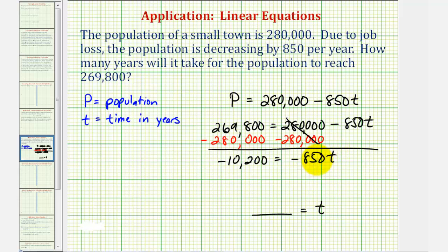To solve for T, we'll divide both sides by negative 850. Negative 10,200 divided by negative 850 is equal to 12. So we have 12 equals, on the right side, this simplifies to one T or just T, which means our solution is T equals 12. This means it'll take 12 years for the population to reach 269,800.